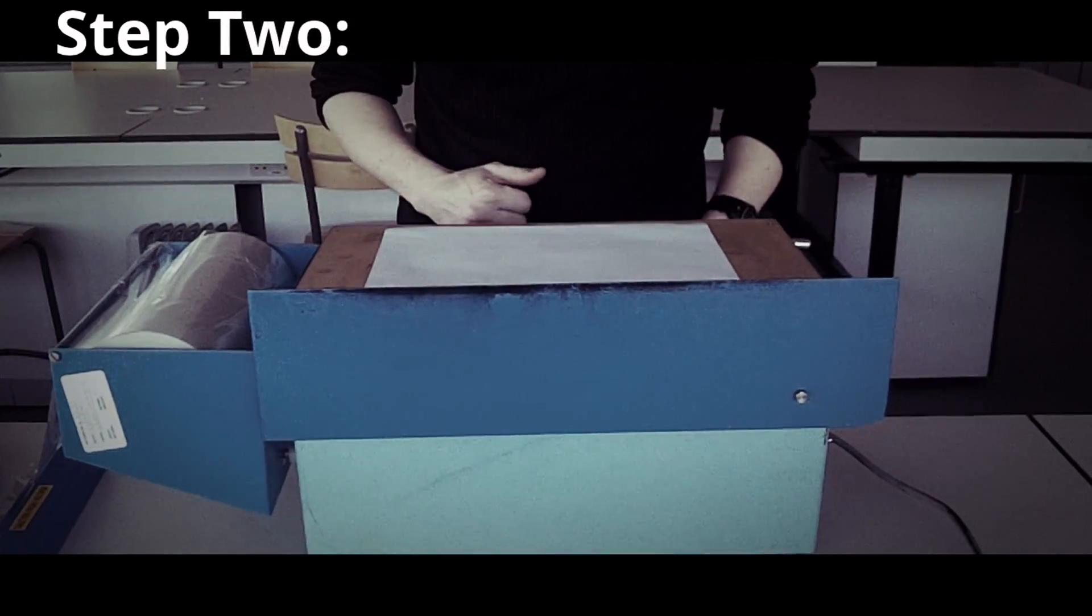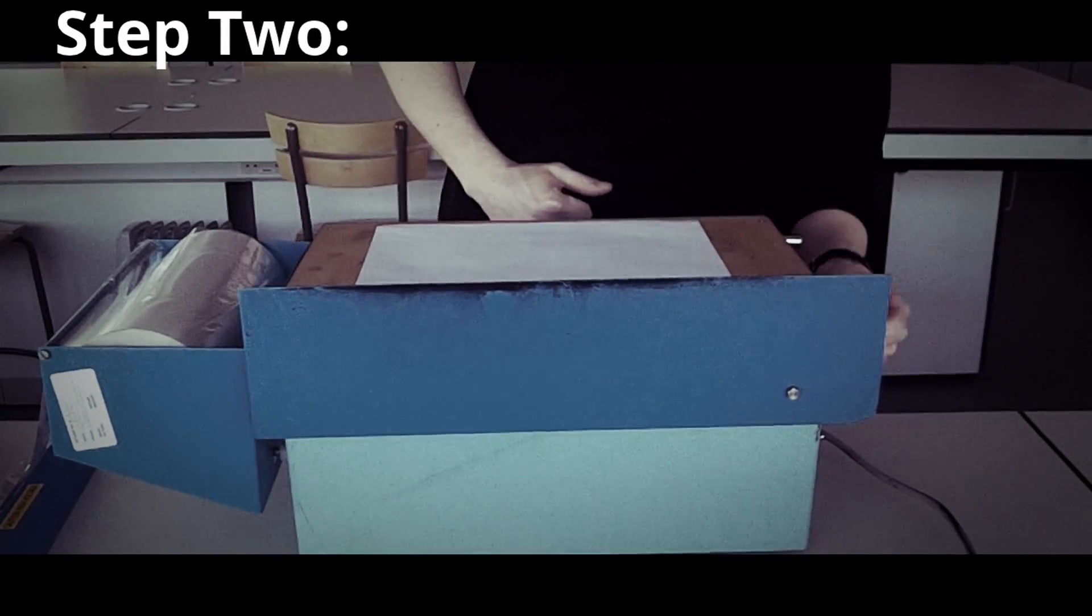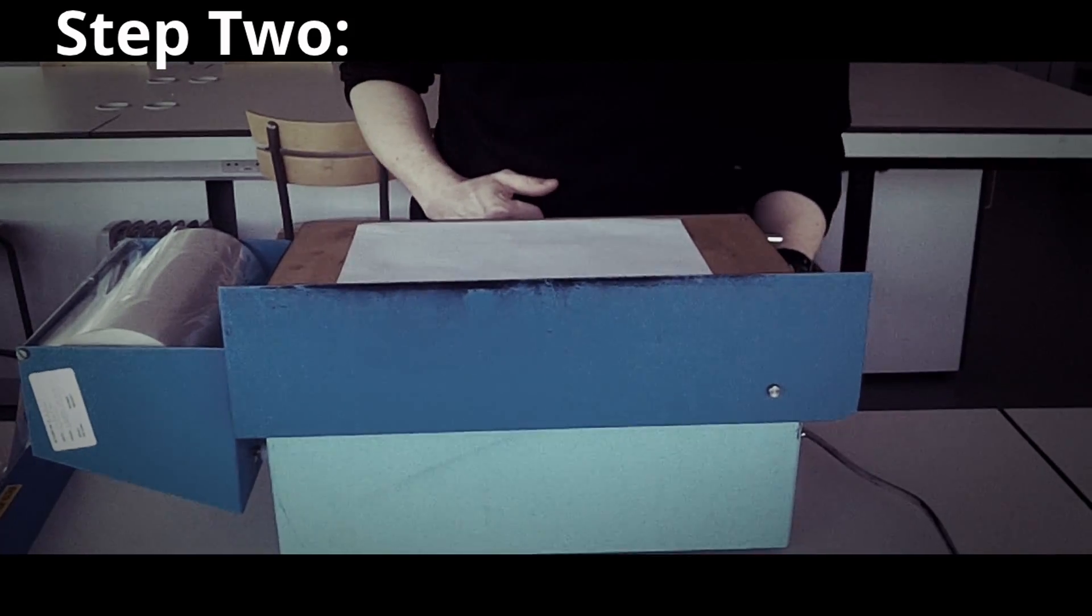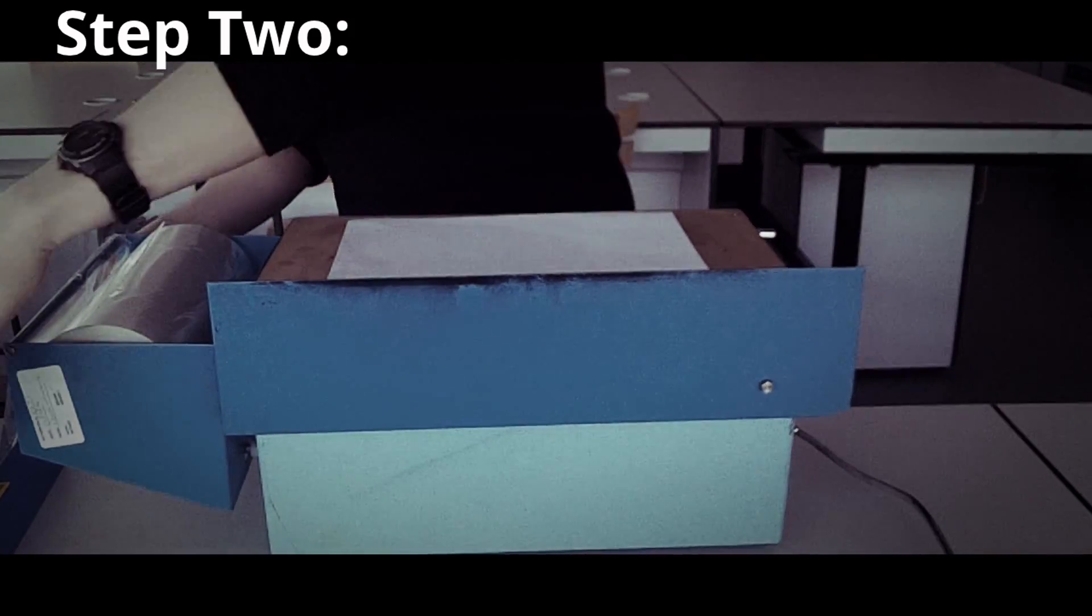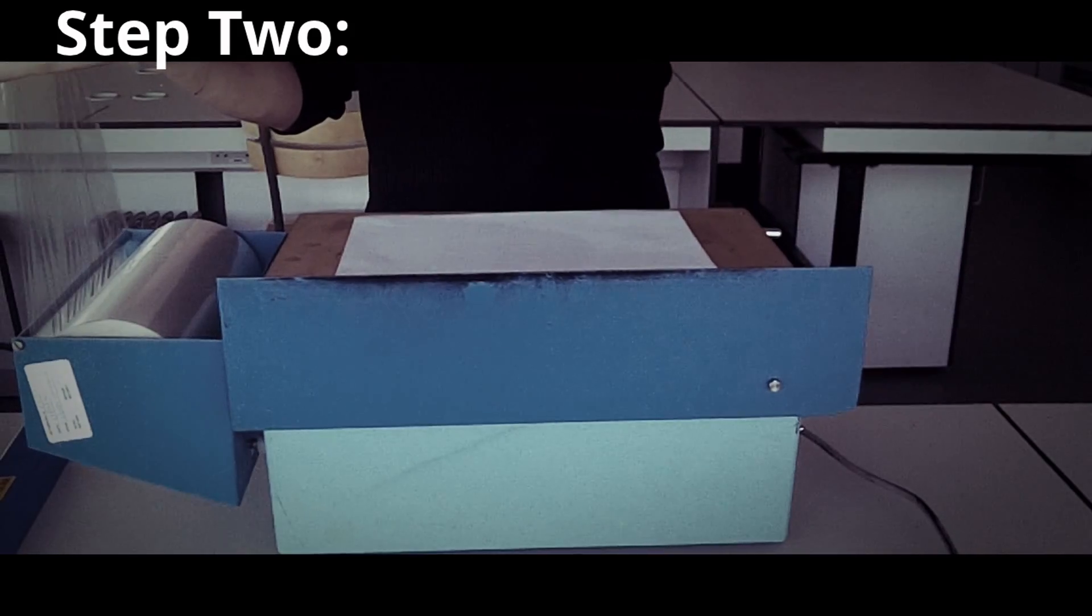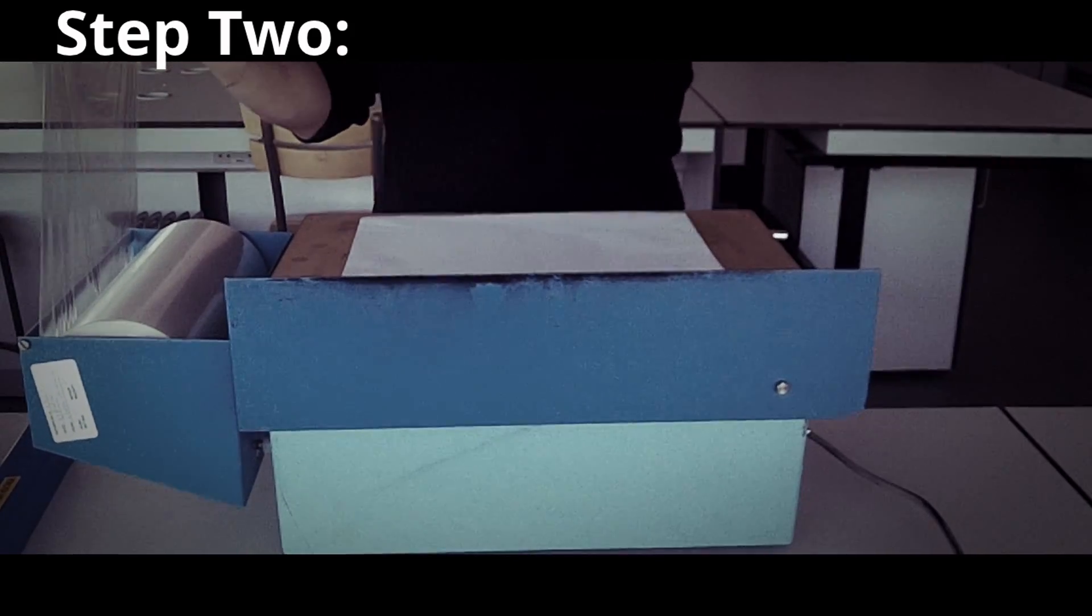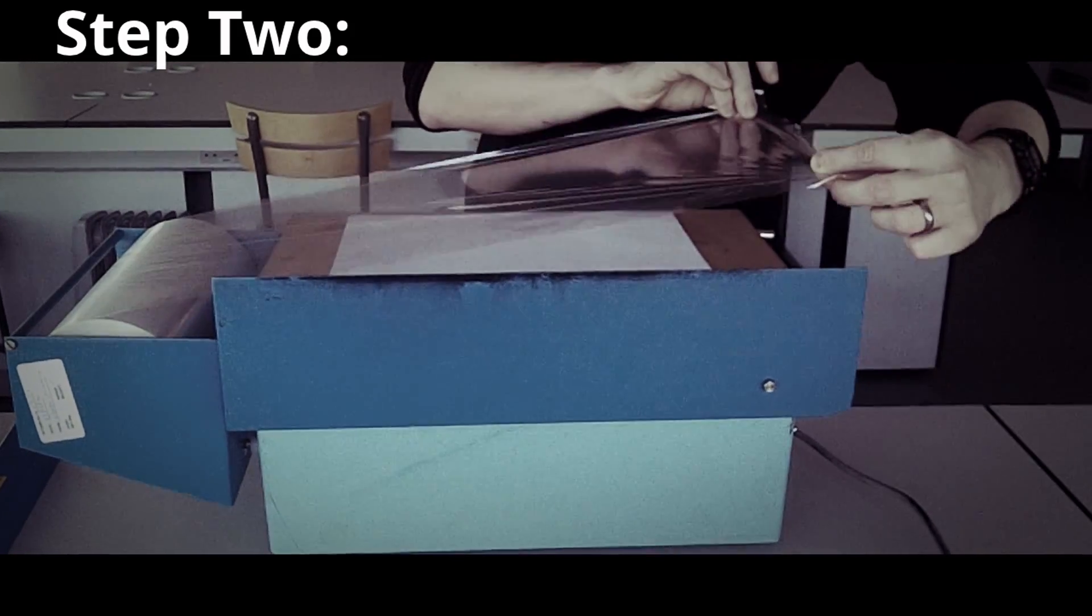Take the document and place it on the ESDA machine. Then on the side of the ESDA machine, switch on the vacuum pump. Then take a sheet of Mylar and stretch it carefully over the document.